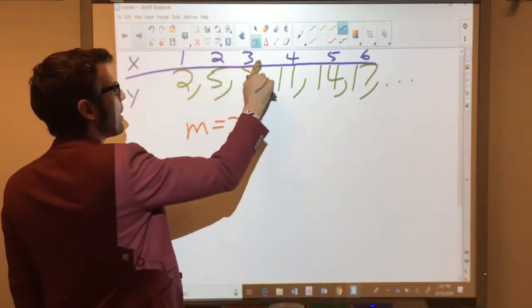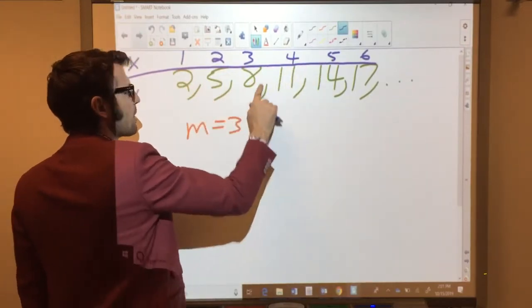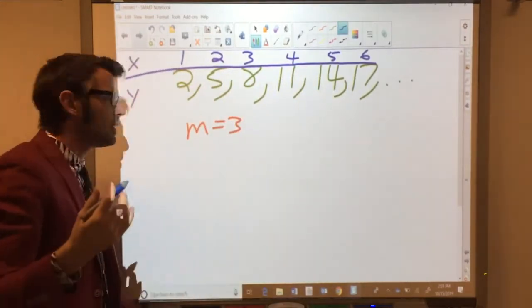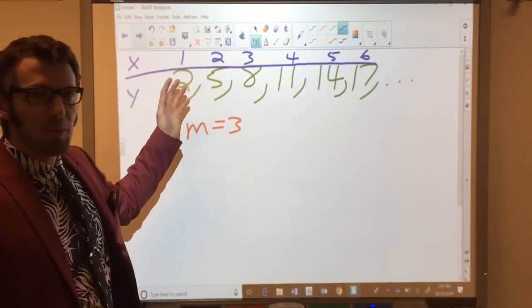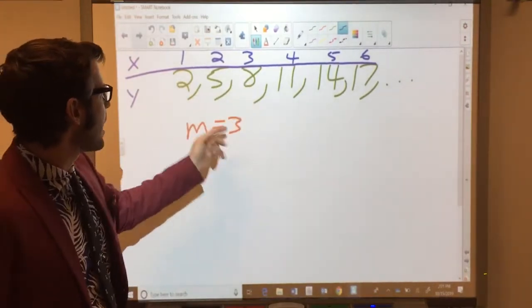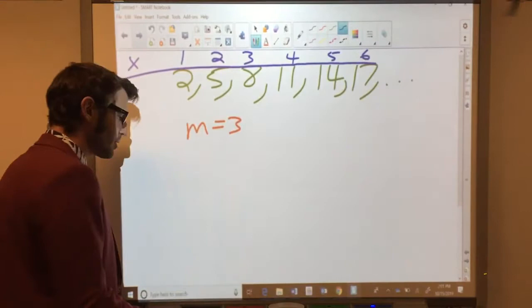This is going up by 1 each time, and this is going up by 3, and my slope formula says that it should be rise over run, so the y's go on top, the x's go on the bottom. That seems logical.